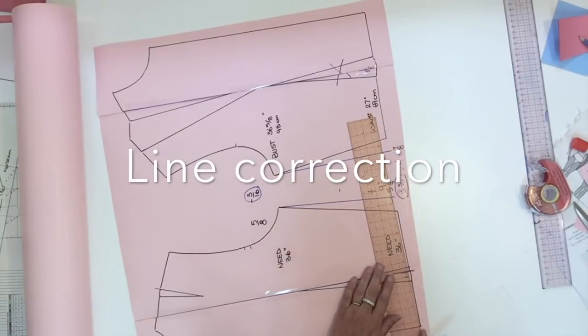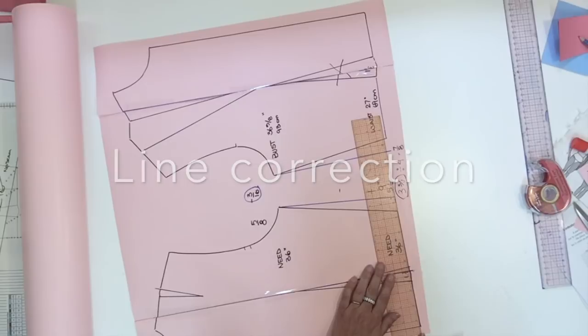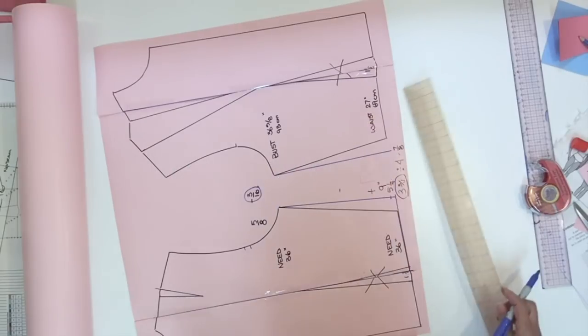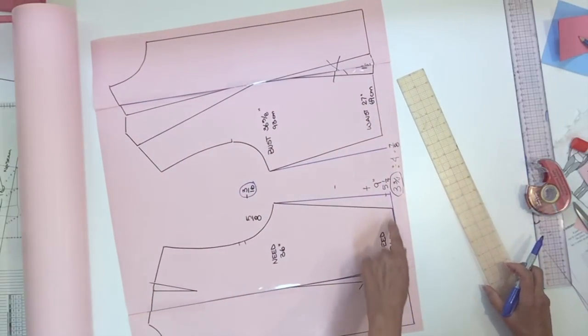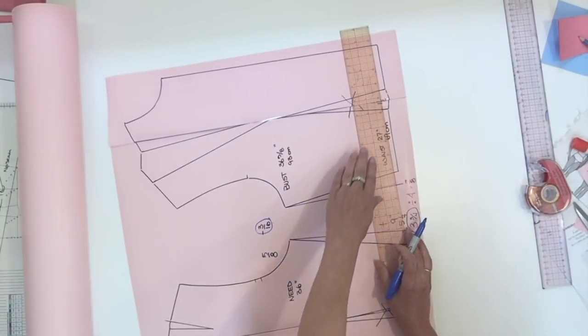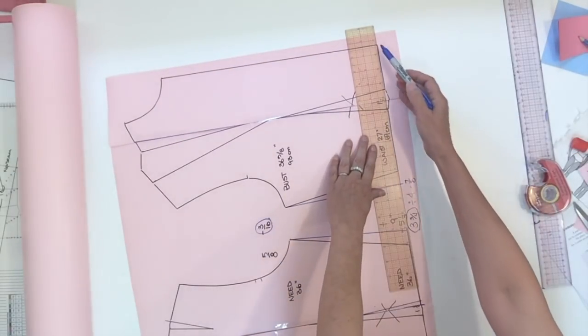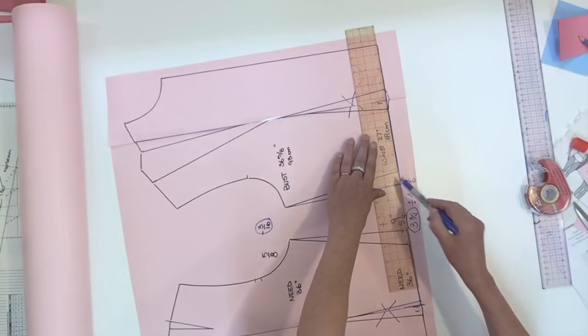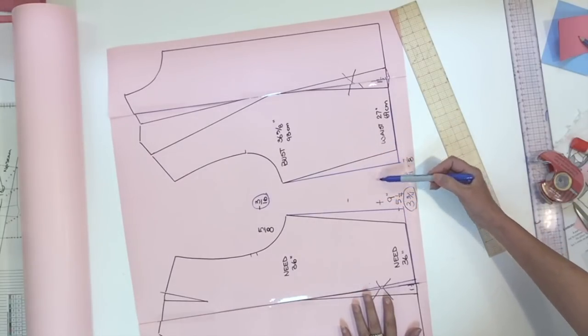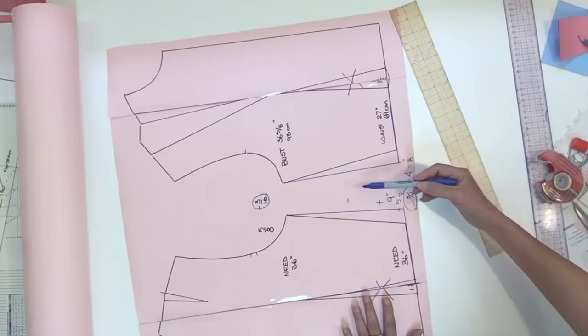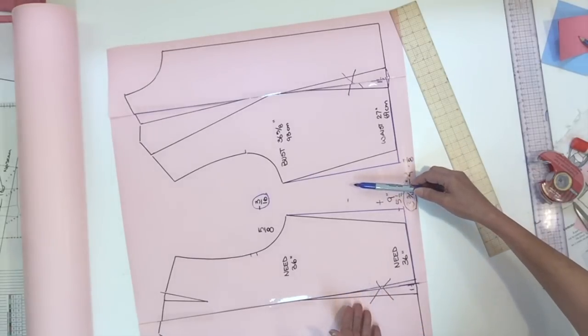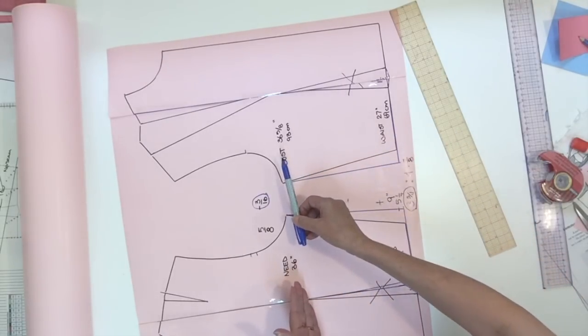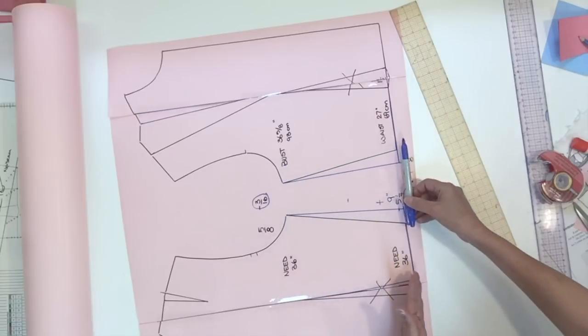Now remember we don't have darts anymore so you could just make your waistline straight from the center back to the side seam. And the same thing in the front straight from the center front all the way to the side seam. Maybe you notice that there's still a little angle for the waist and it's normal like that because you have more ease at the bust level than you have at the waist.